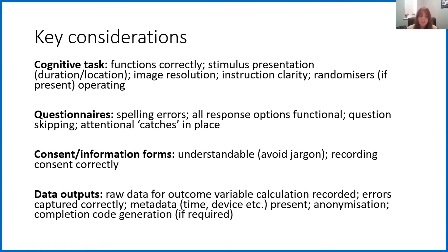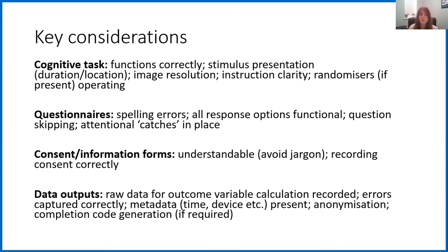However, it's also really important to check other parts of your study. A misinterpretation of a questionnaire can be just as detrimental as a failed cognitive task. Things to look out for with questionnaires include spelling errors, making sure that all of the response boxes are working in the way you want them to, making sure that if participants can skip a question because it's not relevant to them — or if you want to force them to answer all questions — that is in place, and also making sure that any attentional checks are working. It's also really important to check your consent and information sheets to make sure these are understandable and that you're not using scientific jargon your participants don't use. Make sure that consent is being recorded correctly, as if it hasn't recorded consent or participants were somehow able to skip this page, you don't have informed consent and you have to remove all of their data.